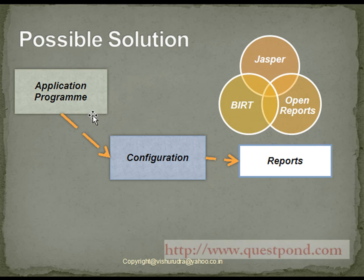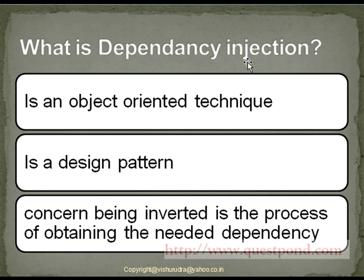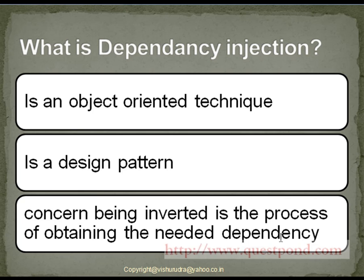This is an example of dependency injection. Dependency injection is an object-oriented technique and a design pattern, which is one of the best possible ways to solve a given problem. In the case of dependency injection, the concern being inverted is the process of obtaining the needed dependency. In the above reporting example, we were dependent upon the reporting tool for generating our reports, and the process of obtaining it is delegated to the configuration file and the framework supporting it — so we do not directly interact with the process of obtaining the needed dependency.